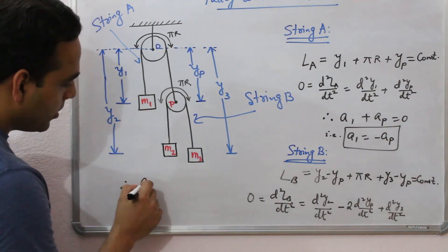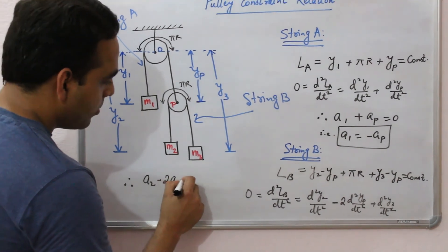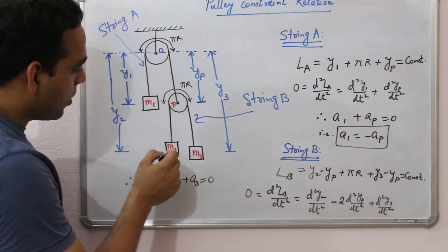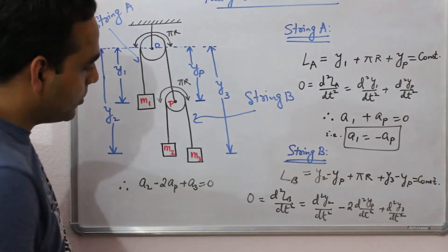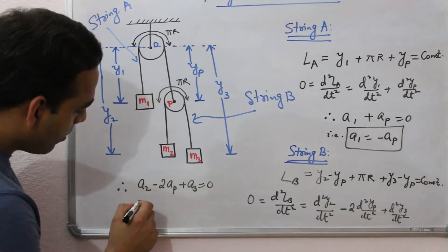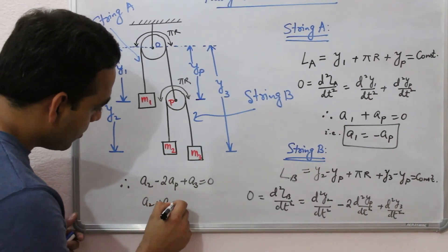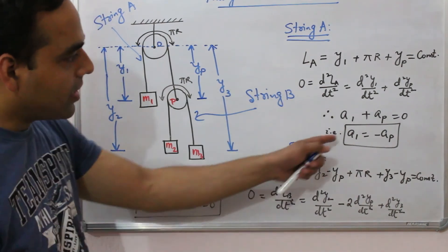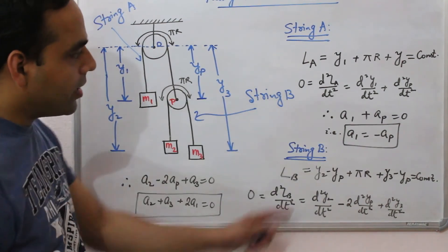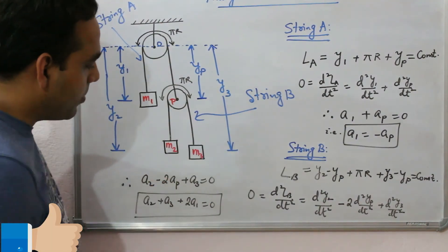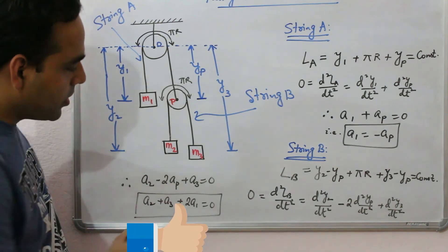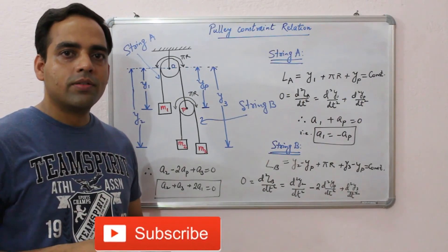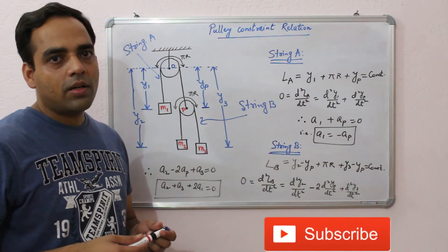Therefore we can write: a2 − 2ap + a3 = 0, where a2 is the acceleration of block M2, a3 is the acceleration of block M3, and ap is the acceleration of movable pulley P. Since a1 = −ap, we can replace 2ap with −2a1, giving us: a2 + a3 + 2a1 = 0. These are the two constraint relations with which we can find the relation between the accelerations of M1, M2, and M3. In the next video I will discuss the same problem with another method.